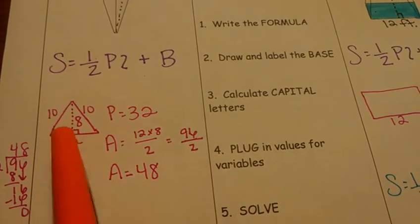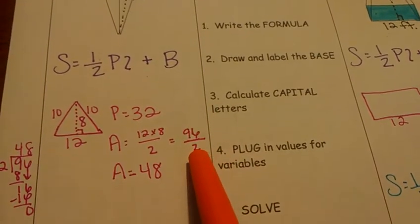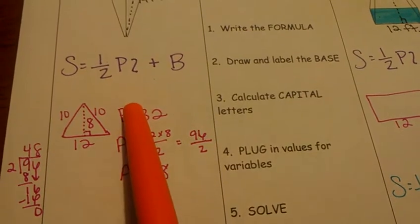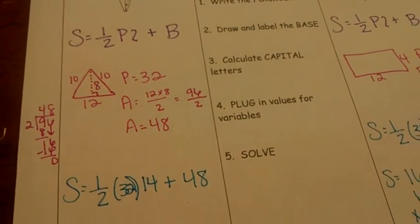Base of my triangle is 12. Height of my triangle is 8. So 12 times 8 is 96. Divided by 2, 48. So I've got perimeter of my triangle. Now I've got the area of my triangle. Now I've got to plug in my numbers.